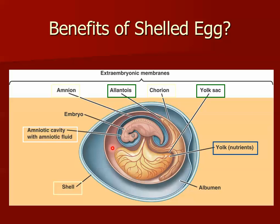Just like you had an amniotic sac around you when you were a fetus — this could be an embryonic reptile or an embryonic chicken. Another extra-embryonic membrane is the allantois. In humans, this helps form your umbilical cord. Another extra-embryonic membrane is the chorion, which is always involved with gas exchange. You see it around the inner part of the shell. In humans, the chorion helps form the placenta.